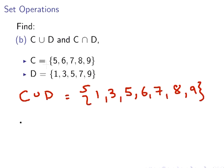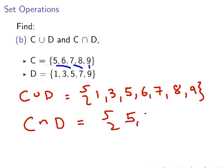Now for the intersection, let's pick out the elements that are in both. We have 5 is in both, 7 is in both, and 9 is in both. So C intersection D is {5, 7, 9}.